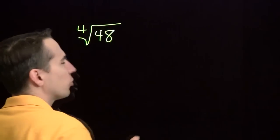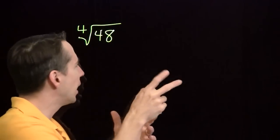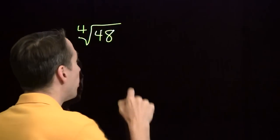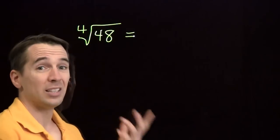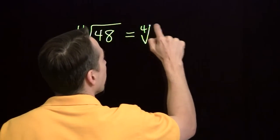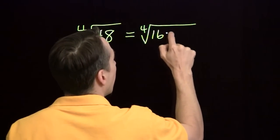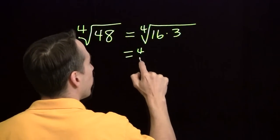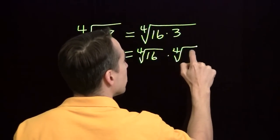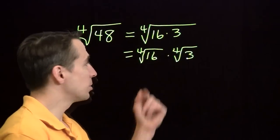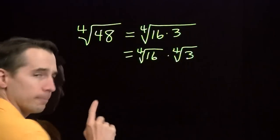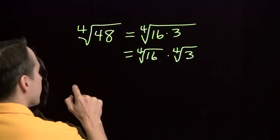Fourth root of 48. Now we simplified square roots before just by pulling out perfect square factors. Here we're going to do something very similar, but we're going to try to pull out perfect fourth power factors. Now 48 is just 16 times 3. 16 is 2 to the 4th. So we're going to pull out a factor of 16. And we'll do that by breaking the 4th root of 16 times 3 into the 4th root of 16 times the 4th root of 3. Maybe you find that step a little bit fishy going from here to here. That's good.